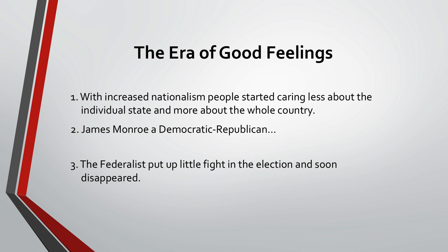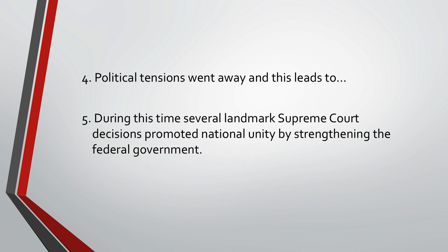James Monroe, a Democratic Republican, wins the election of 1816 by a landslide. The Federalist Party ran against James Monroe but put up very little fight, and soon that party actually disappears. Political tensions fade away because there's really only one dominant party that everyone is supportive of — the Democratic Republicans — and this leads to an Era of Good Feeling. When you're not fighting back and forth within political parties, you get a lot accomplished, and if the people of the country support that one political party, a lot of things are going to get done.